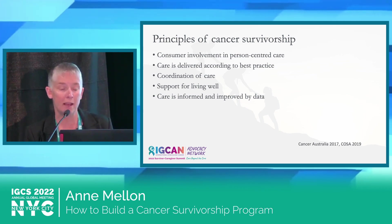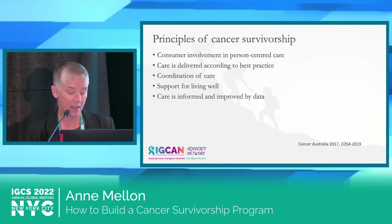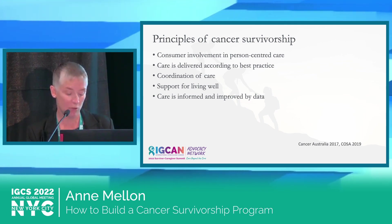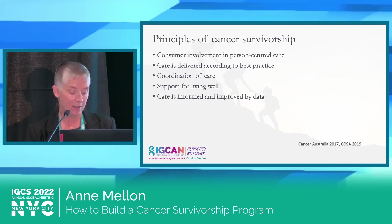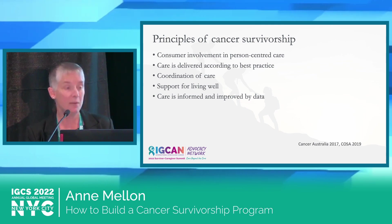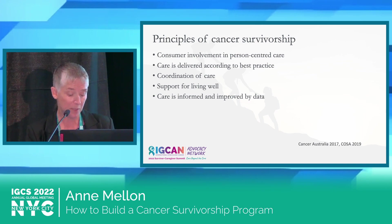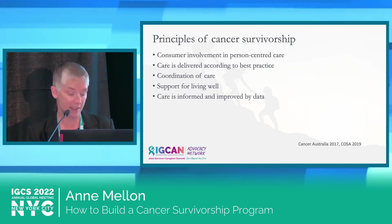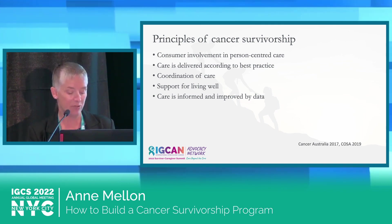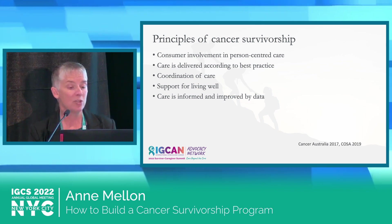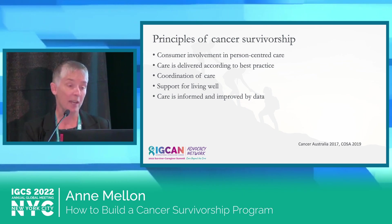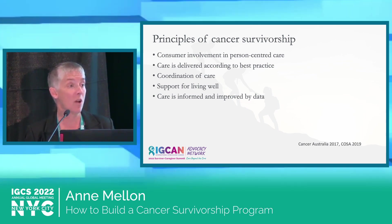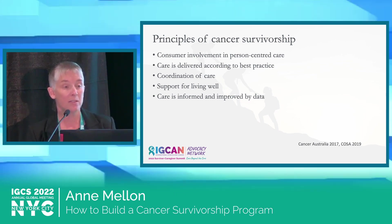Survivorship should also include support for living well. The supportive care needs of patients — physical, psychological, spiritual, social, and cultural information needs — should be assessed and patients should receive appropriate referrals to meet those needs. People affected by cancer should be supported to make informed, healthy lifestyle choices to promote wellness, manage treatment-related side effects and comorbidities, and reduce the risk of secondary and recurrent cancers. The fifth principle is that care should be informed and improved by data — local and national collection and reporting of key cancer data, including patient experience and outcome data, can indicate high-quality health care and help us influence our health system to make improvements.